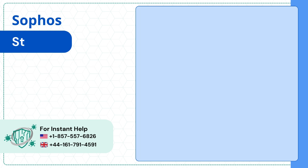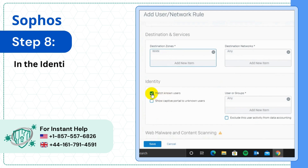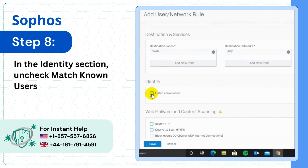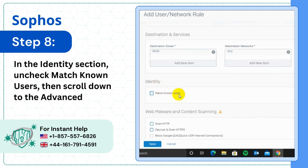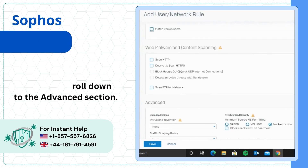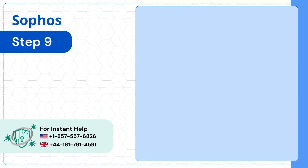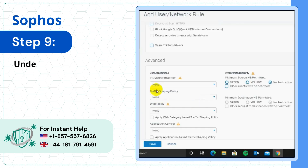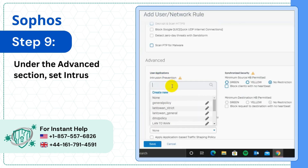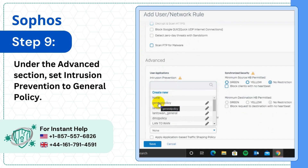Step 8: In the Identity section, uncheck Match Known Users, then scroll down to the Advanced section. Step 9: Under the Advanced section, set Intrusion Prevention to General Policy.